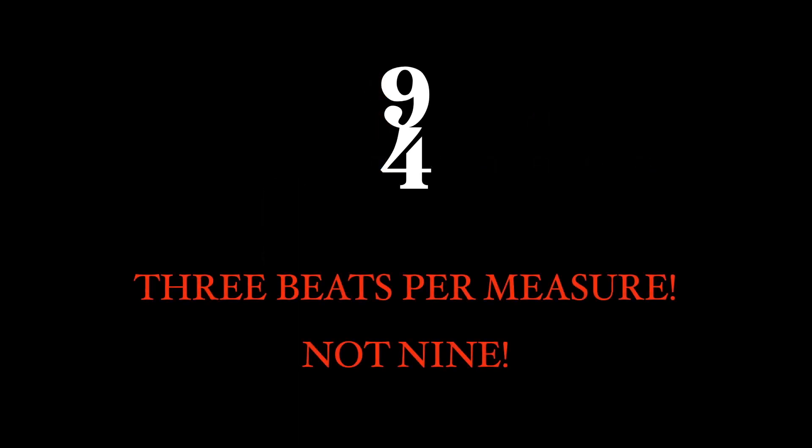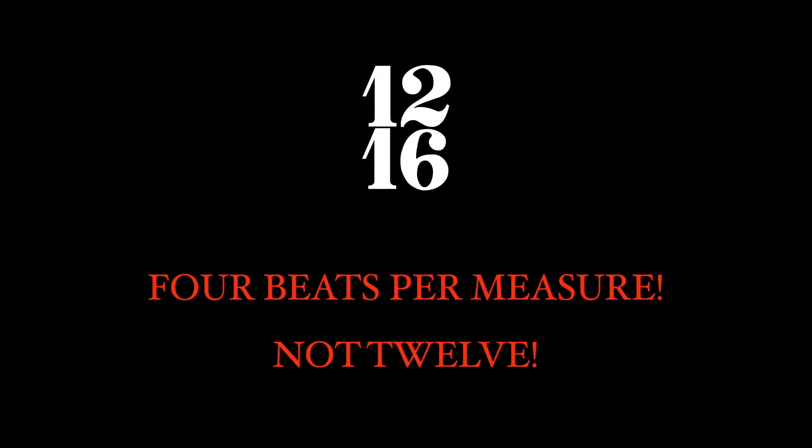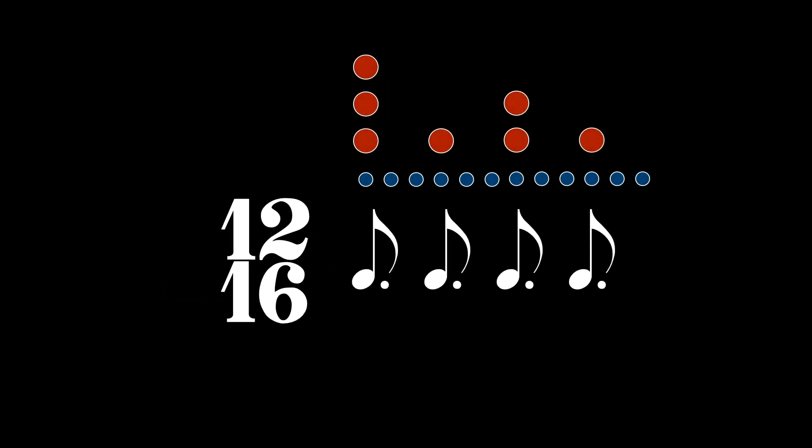Nine-four has three beats per measure, nine divided by three, not nine beats per measure, and the dotted half note represents the beat. Twelve-sixteen has four beats per measure, and the dotted eighth note is the beat.